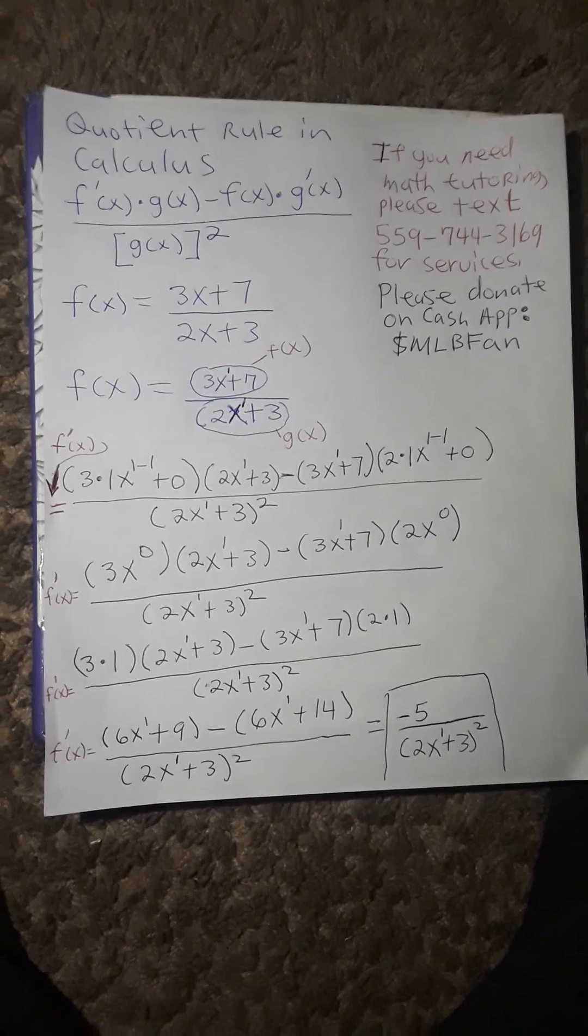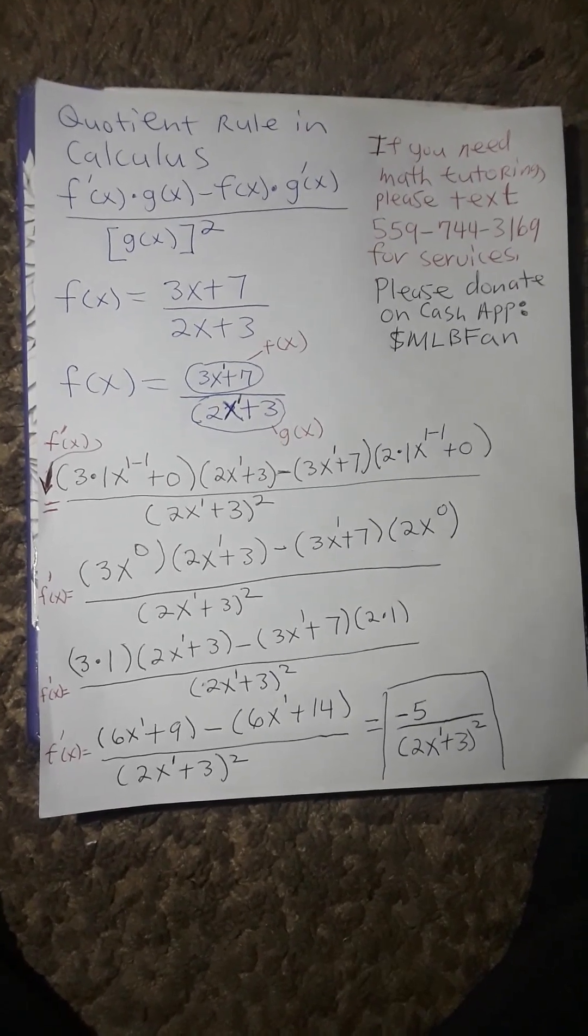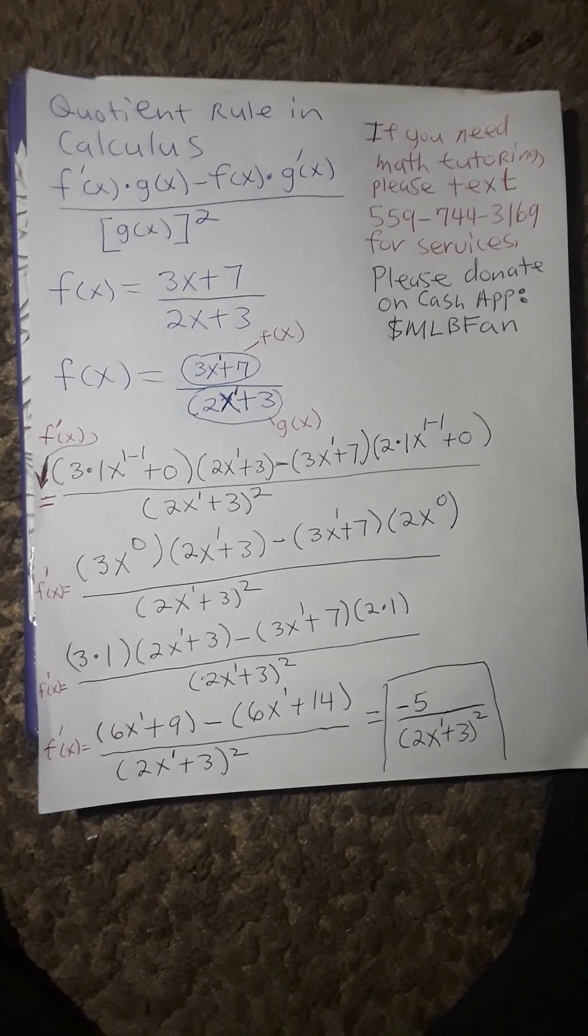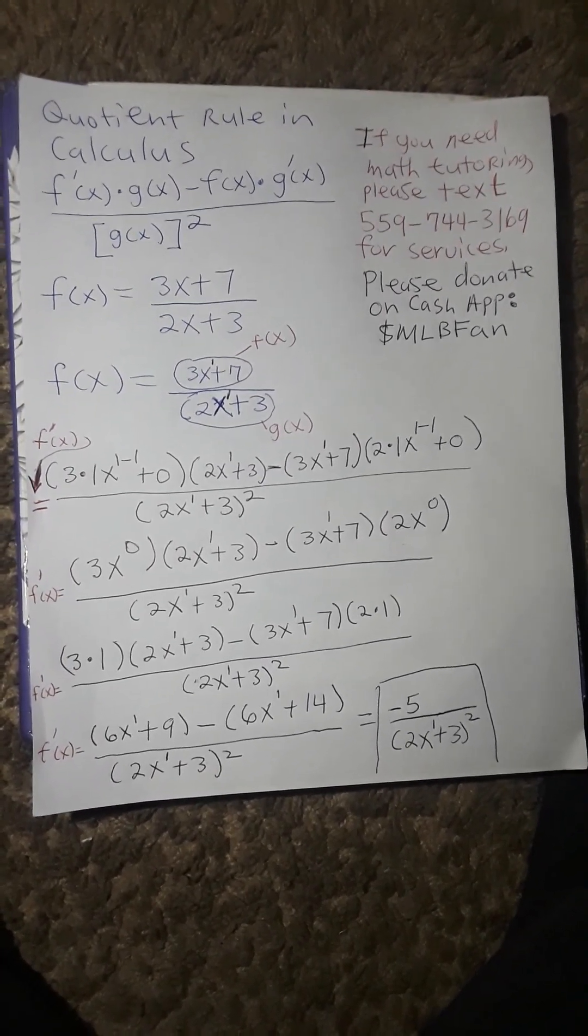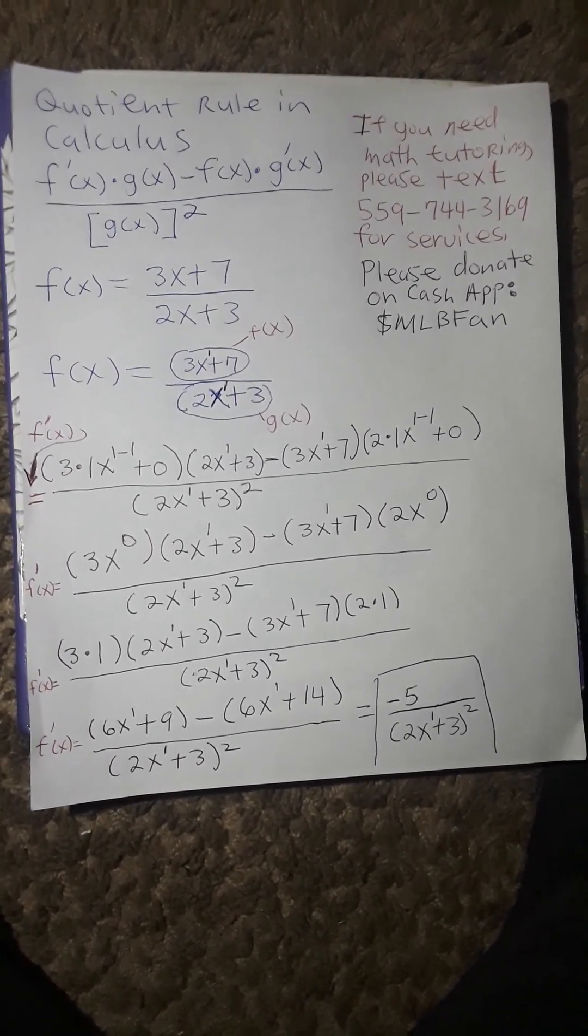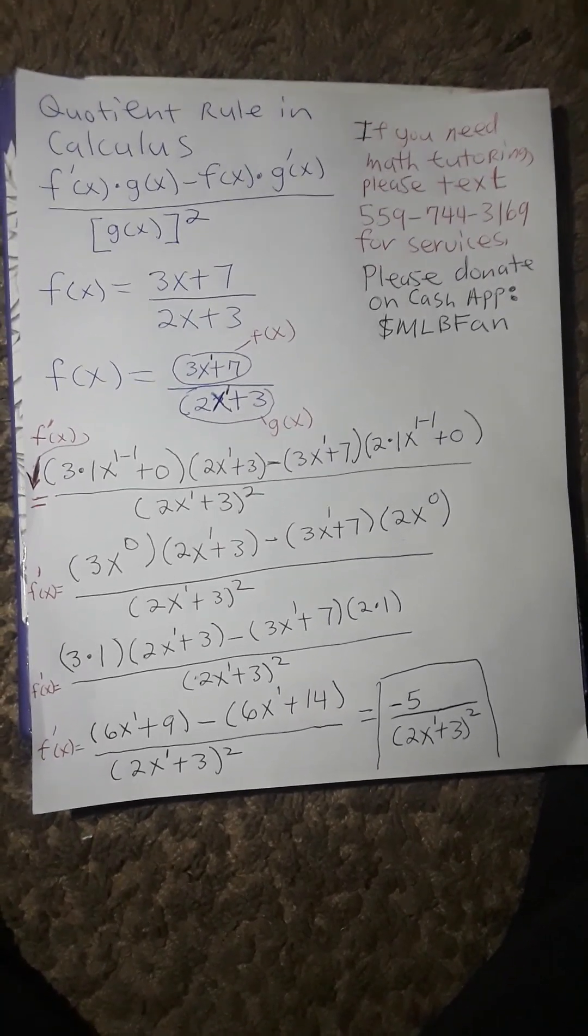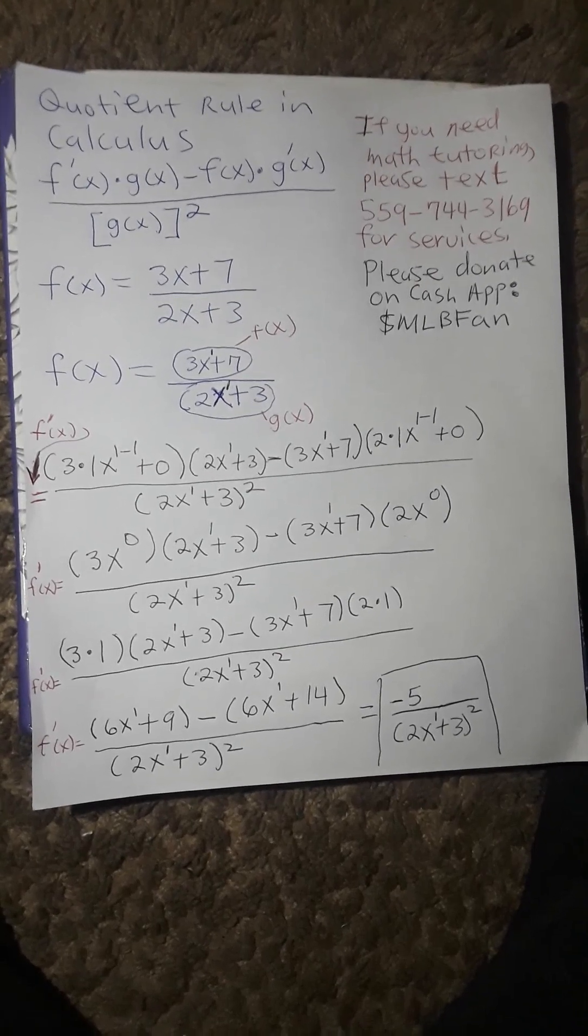That will yield us f prime of x is equal to 3x to the 0 power times 2x to the 1 plus 3 minus 3x to the 1 plus 7 times 2x to the 0 divided by 2x to the 1 plus 3 squared.